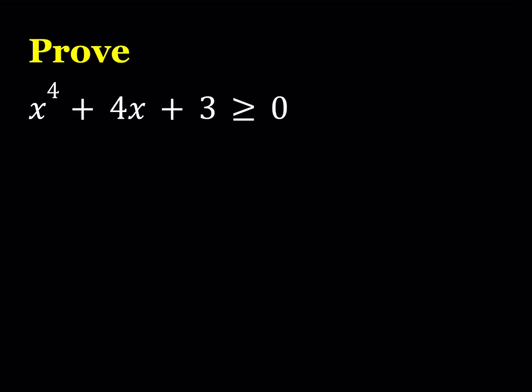Hello everyone. In this video, we're going to be proving an inequality. We have x to the fourth power plus 4x plus 3, and we need to prove that this is greater than or equal to zero. In other words, this function cannot take negative values.